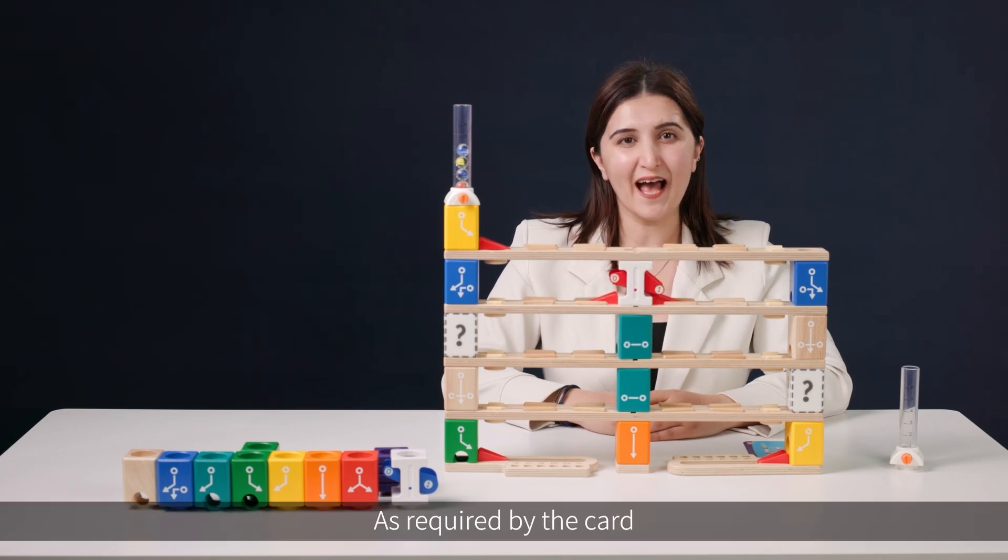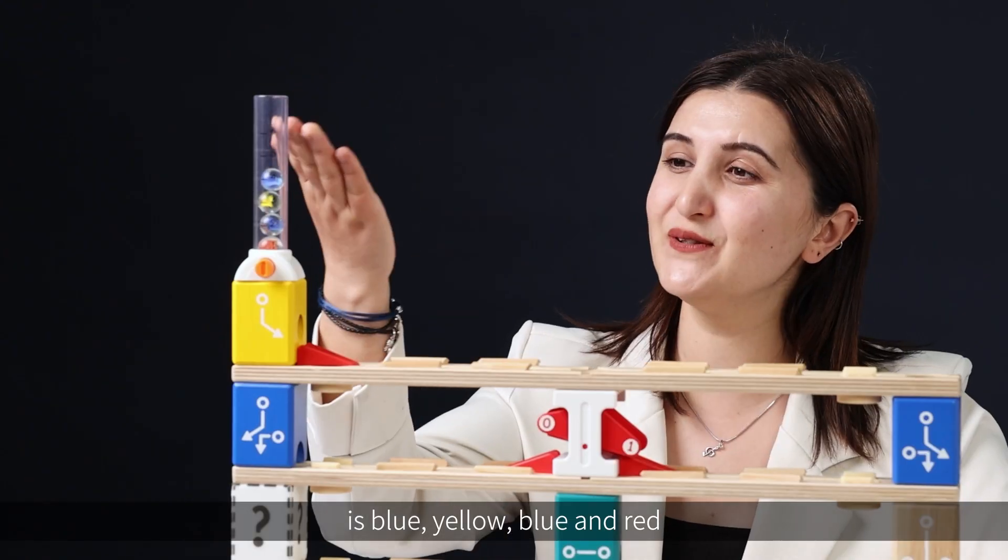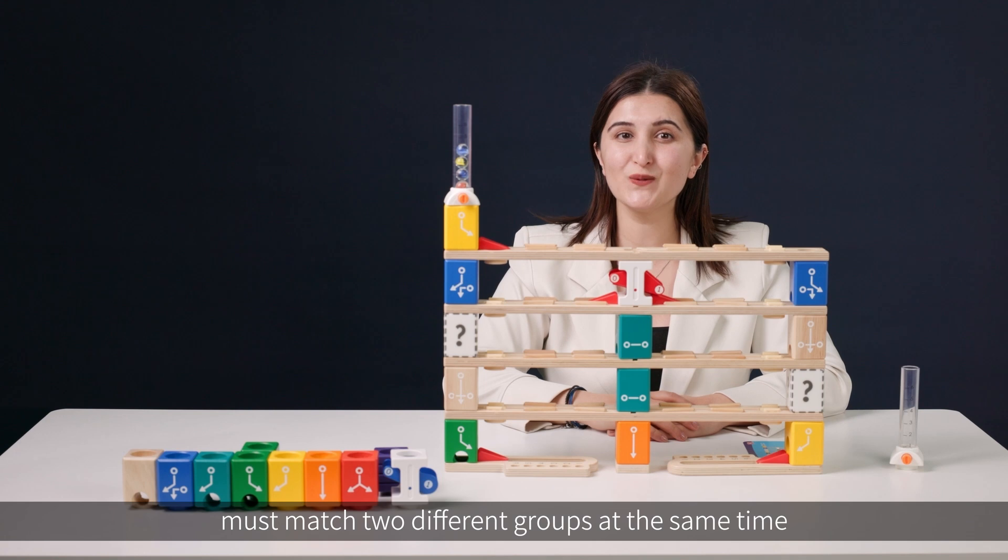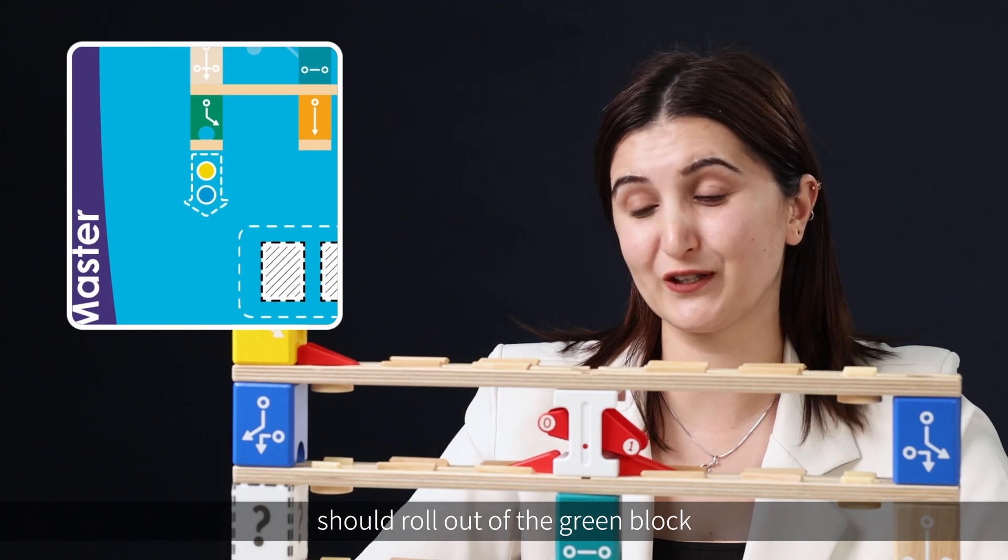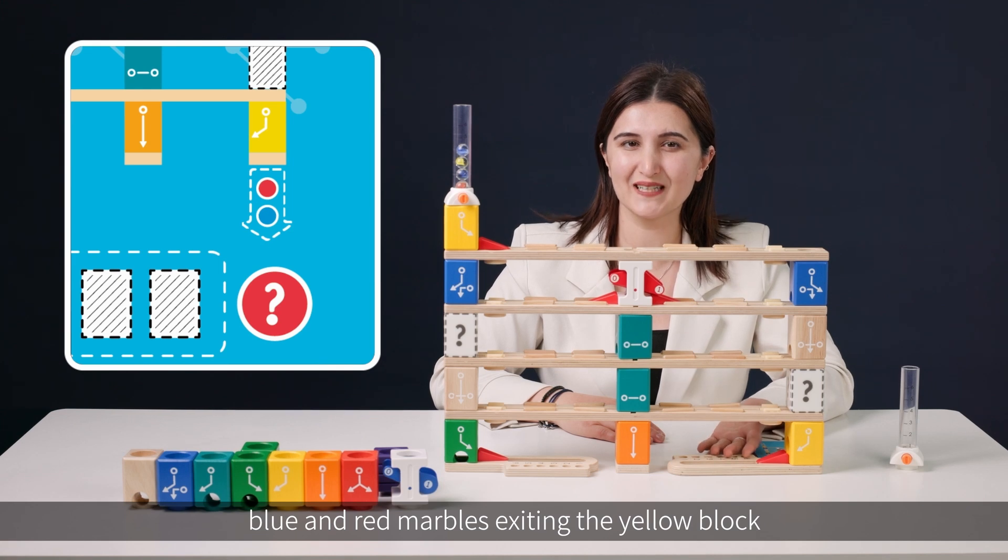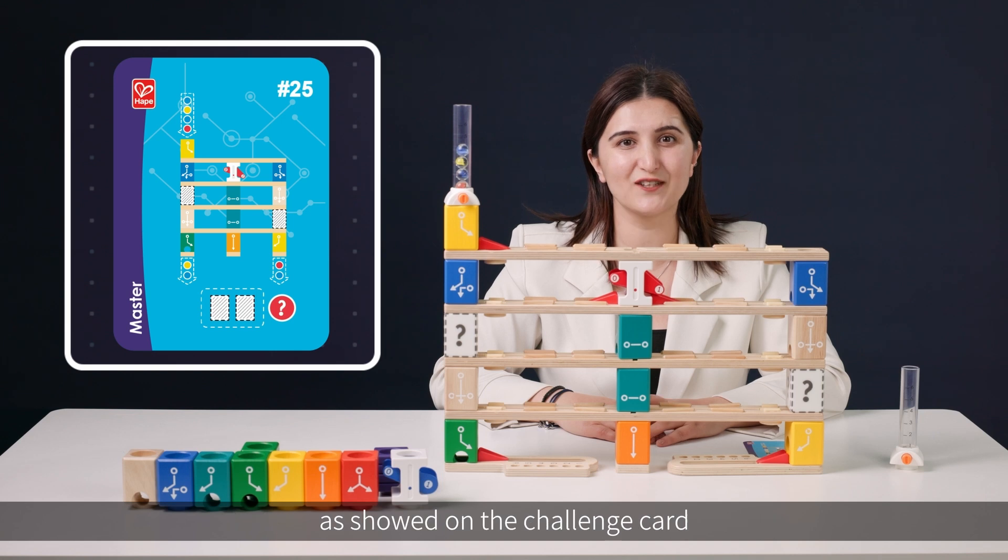Now, let's analyze the challenge. As required by the card, the starting sequence of the marbles is blue, yellow, blue and red. And the results must match two different groups at the same time. The first group is that the blue and yellow marbles should roll out of the green block. And the other group is blue and red marbles exiting the yellow block. Both groups also should be the same color order as shown on the challenge card.